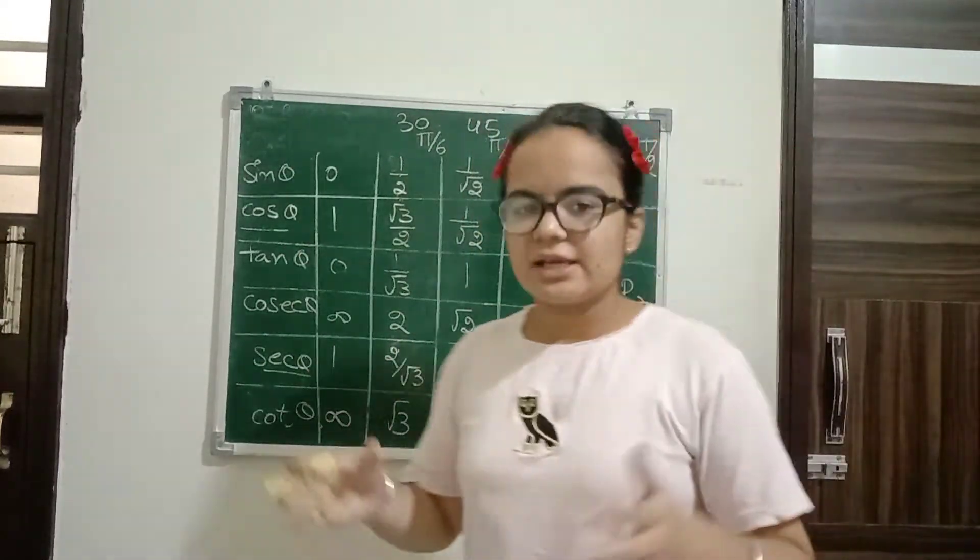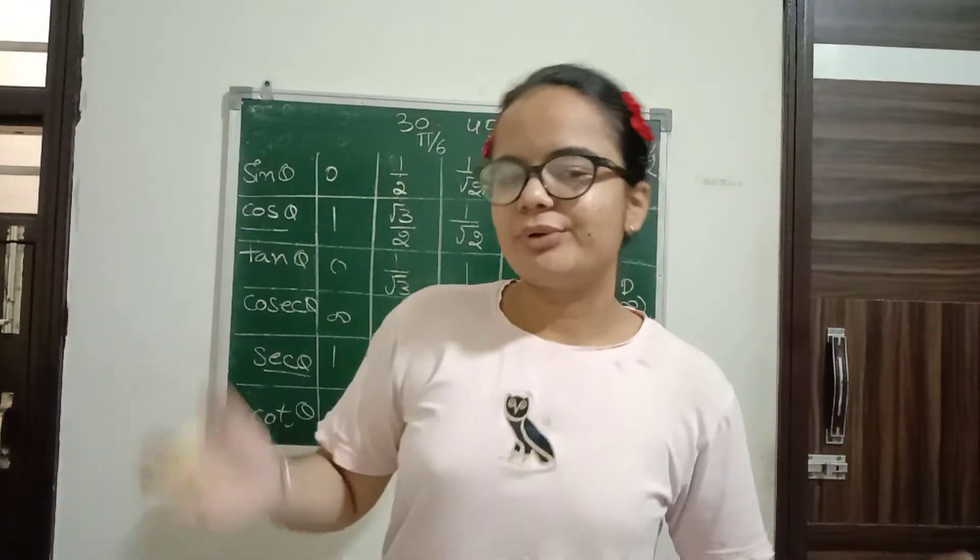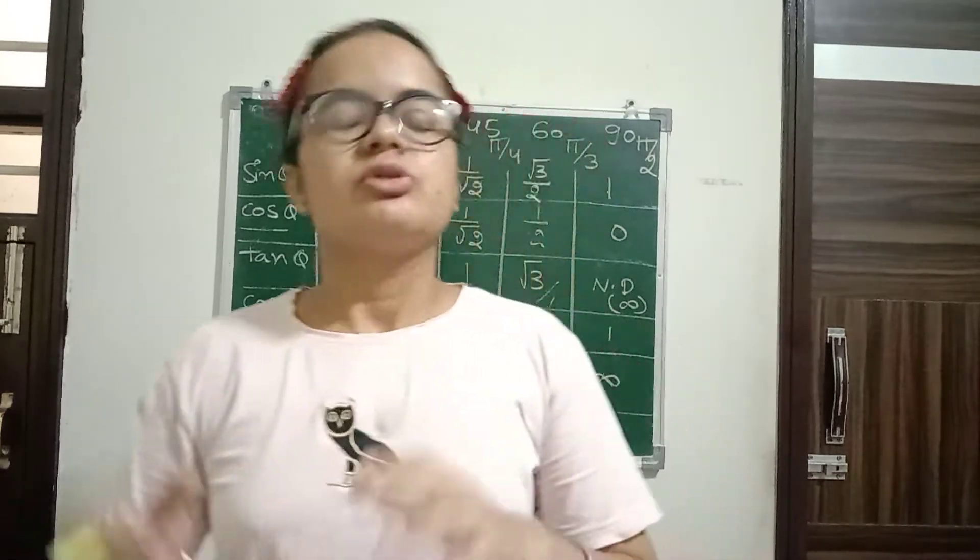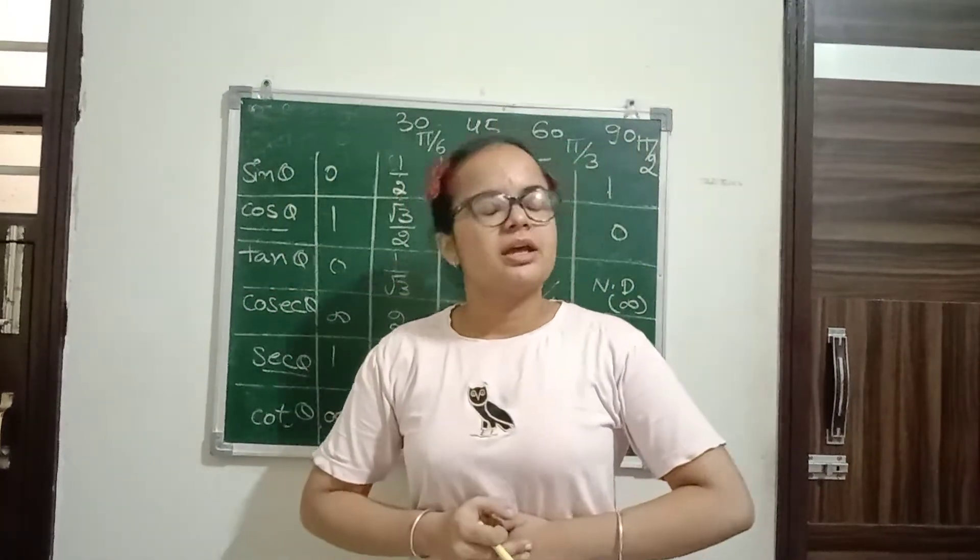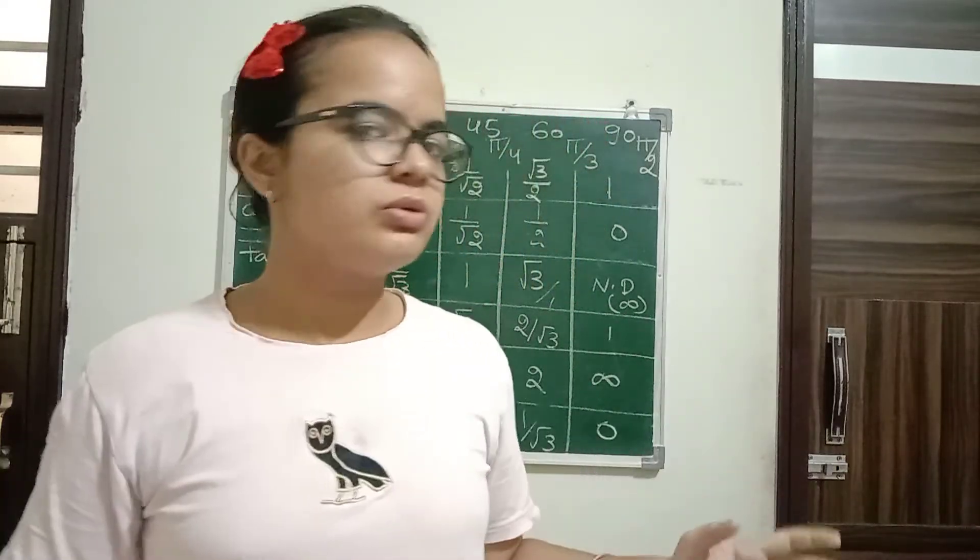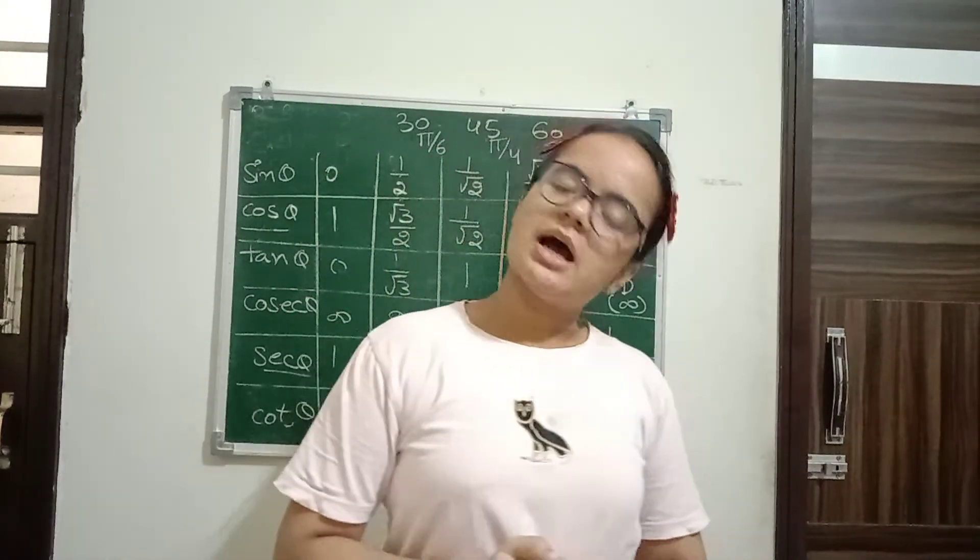Now we will see this simple trick. Just one by root three, the whole table will be memorized. Revise this, then you will be ready to solve the questions with all values to get the answer.